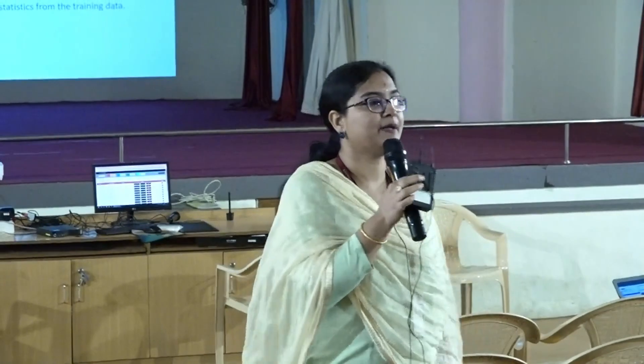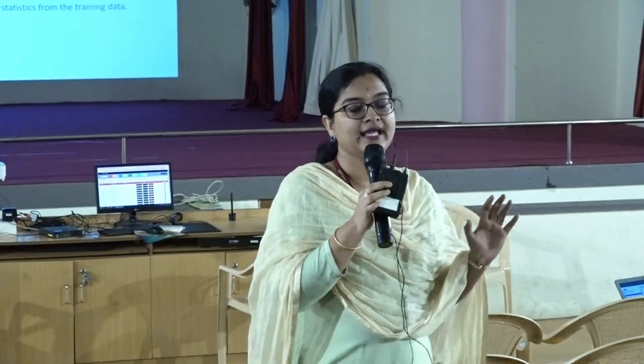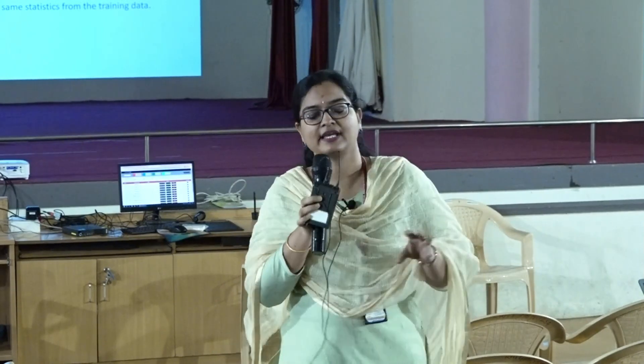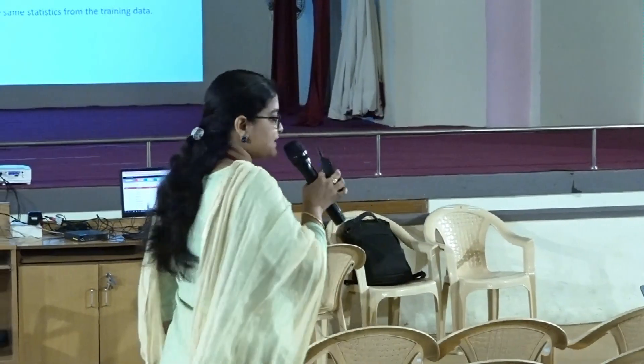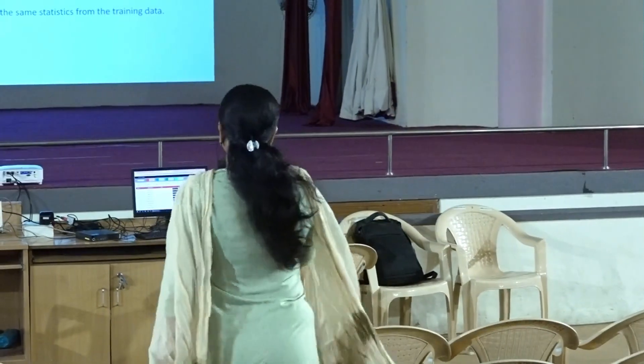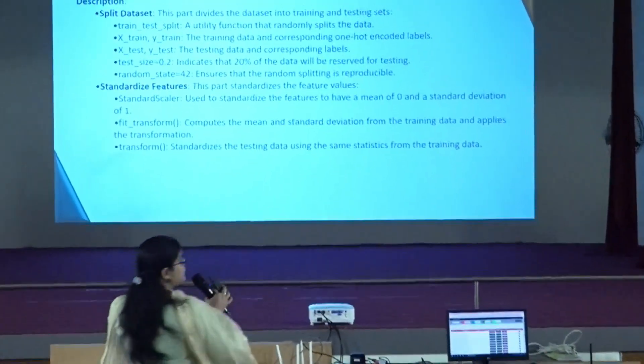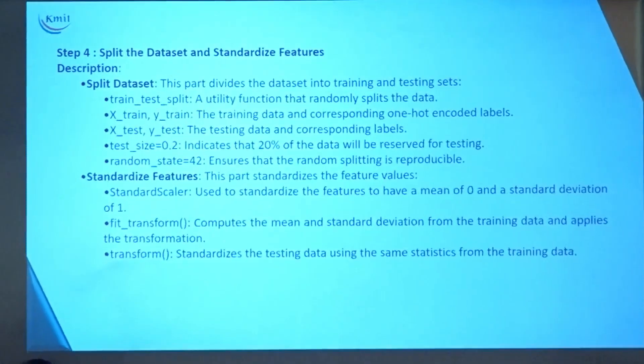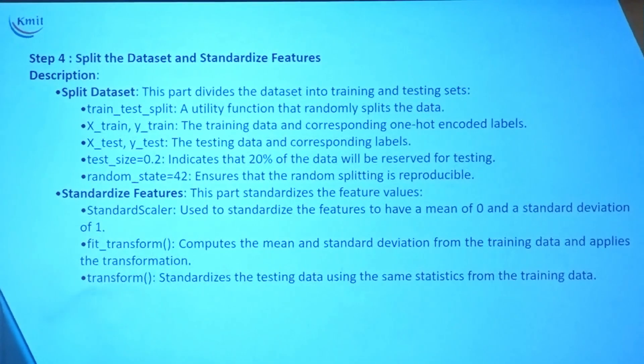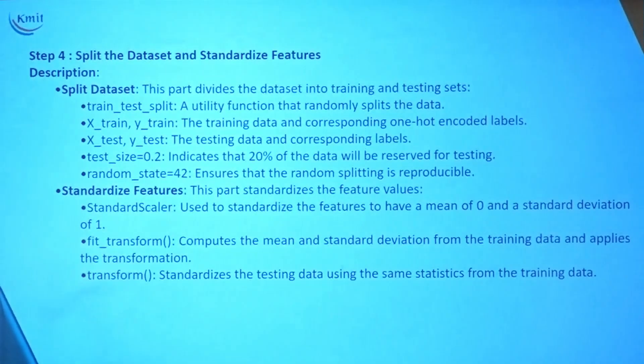We have to make sure whenever we train our model, it should not have any information — standard deviation, mean, or any information about our testing data. That is the reason we fix random state equals 42, so the training model will not know any information about the testing data.